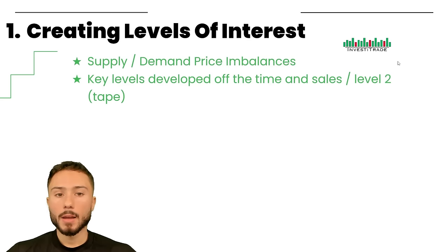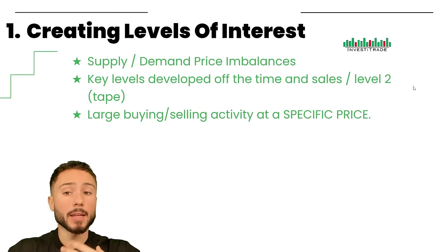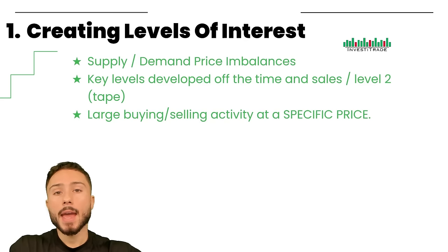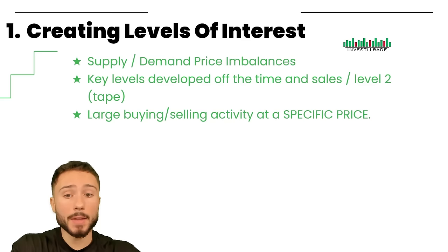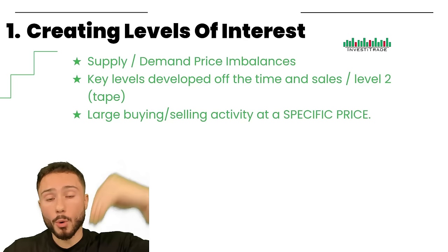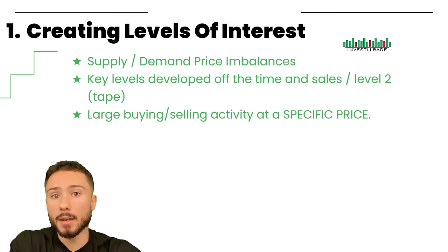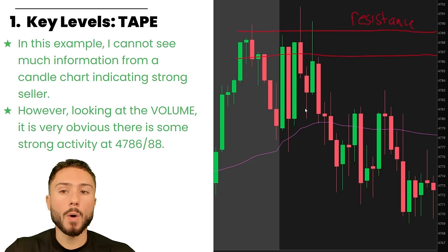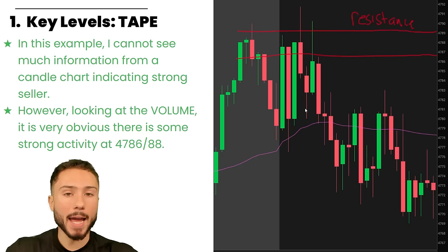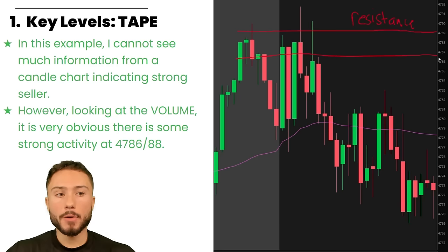Here are all the time frames that I use — you can pause the video and mark those down. One of the most important aspects are key levels developed off the time and sales and level two, which is the tape or simply reading the order flow. What I personally look for is large buying or large selling activity at a specific price. Every single one of my levels of interest are just areas that I am keeping a close eye on once the market tests that price point in the future.